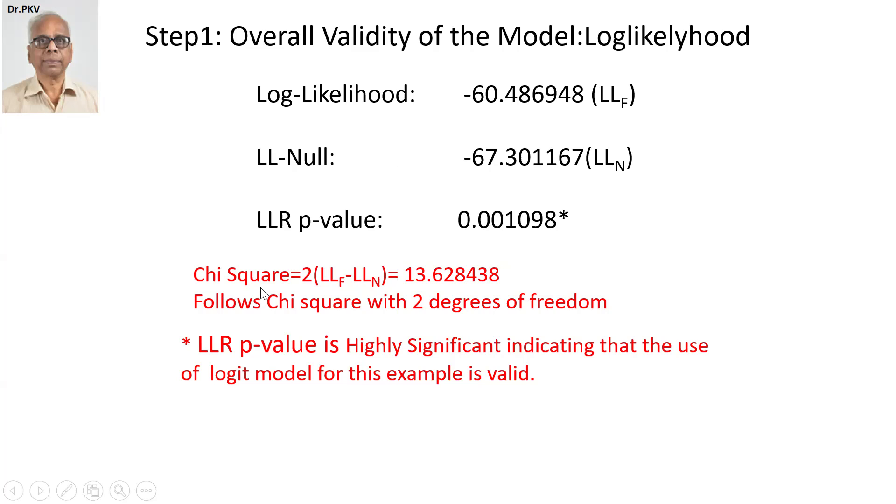Now, there is a chi-squared, which is a non-parametric test in statistics. In this case, it is calculated as 2 times LLF minus LLN. And if you do that here, its value is 13.628438. This is the value. And this follows a chi-squared with two degrees of freedom.